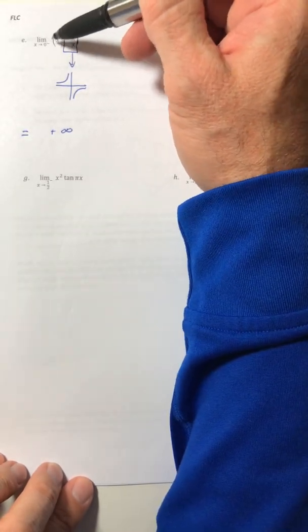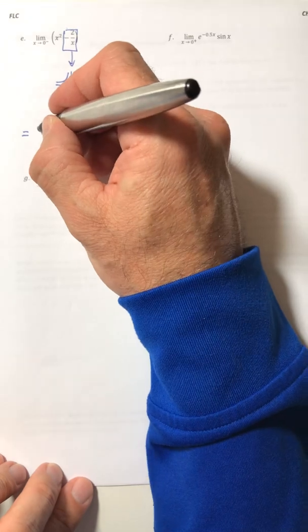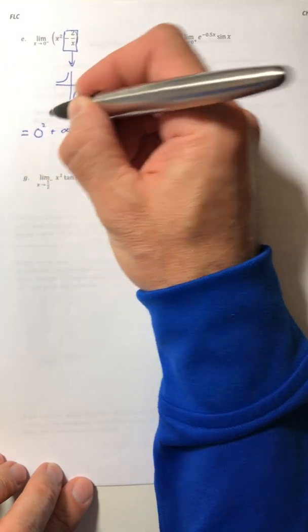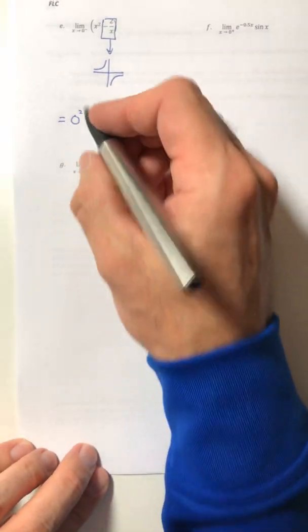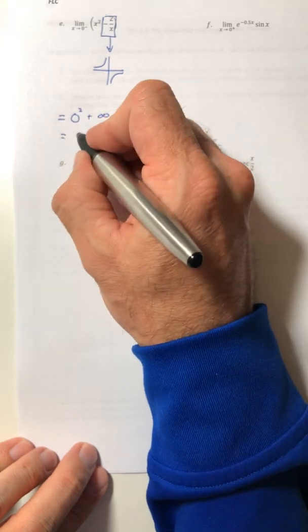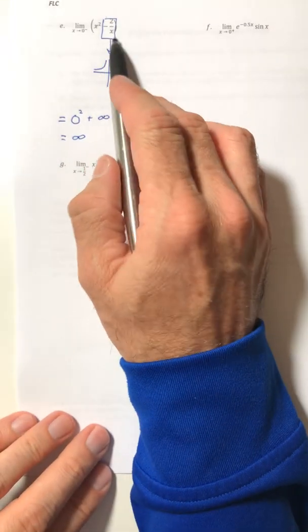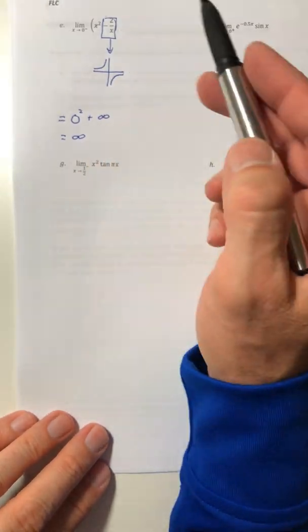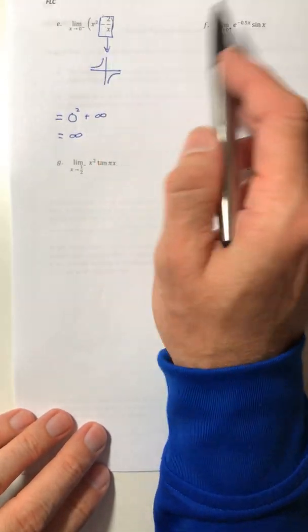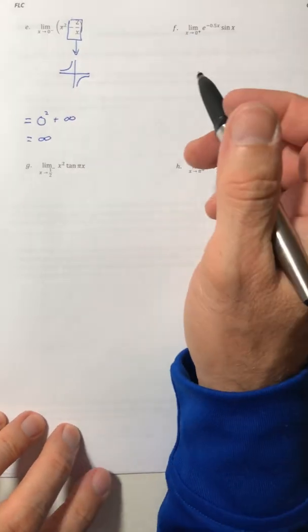The x squared, you can stick a zero in for that. That's just zero squared. And zero plus infinity is infinity. So if you have parts of it that are unbounded, that's okay. Just look at the parts that are unbounded and treat everything else just like you did before.